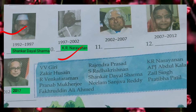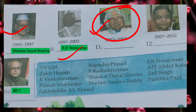The tenth President of India was R.K. Narayanan. And the eleventh President of India, we all know very well — E.P.J. Abdul Kalam. He was the President of India from 2002 to 2007.